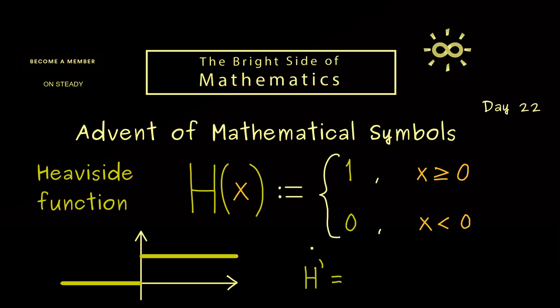What one can do is use the derivative for distributions. And then what comes out is the famous Dirac delta distribution. This is a really nice connection if you see both functions as distributions.